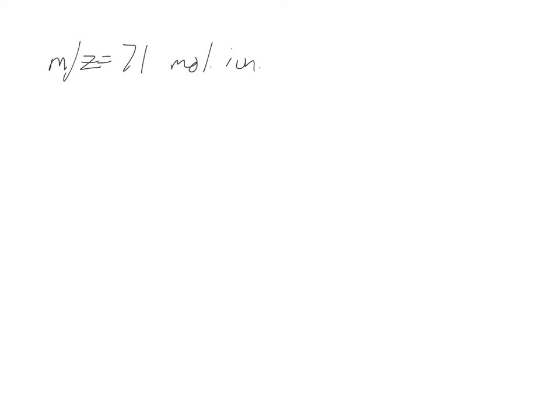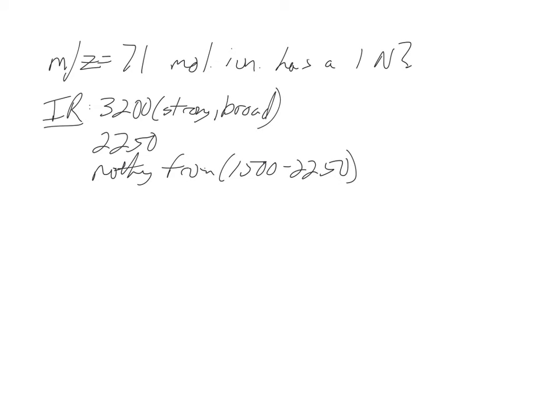For this problem, we're not given a molecular formula but we're told the M/Z — the molecular ion mass is 71. Odd mass means we apply the nitrogen rule: odd mass means an odd number of nitrogens, so we assume one nitrogen. The IR gives us three peaks. At 3200, strong and broad — that tells you OH or NH.